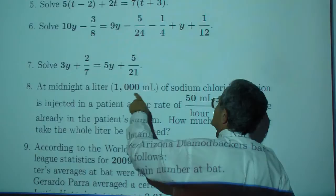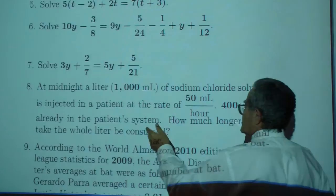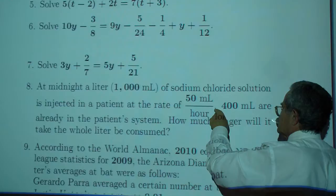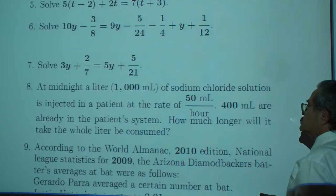Exercise 8. At midnight, a liter (1,000 milliliters) of sodium chloride solution is injected in a patient at the rate of 50 milliliters per hour. That's not a decimal point, it is not a multiplication sign.